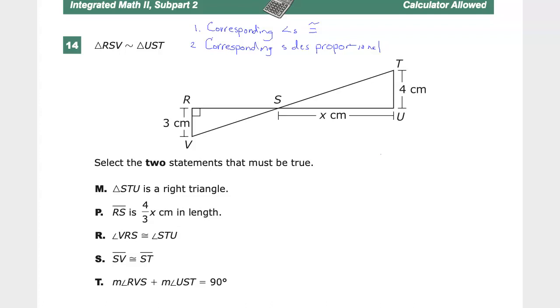The question says triangle RSV and triangle UST are similar. That's what this little symbol here means. In this case, it means that they are similar, not congruent. Select the two statements that must be true. You can see the statements there. I'm going to assume you are okay to read them.